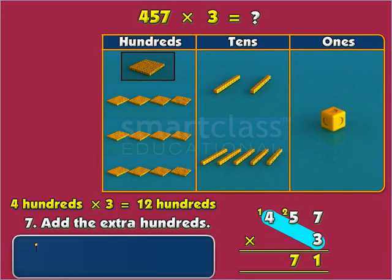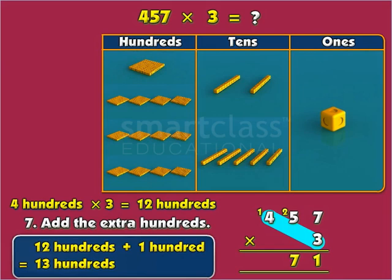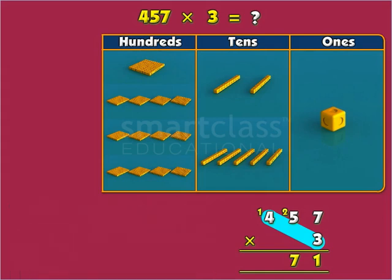Again, 13 is a two-digit number. So, regrouping it, we get 1,300. Move the 1,000 to the thousands column.